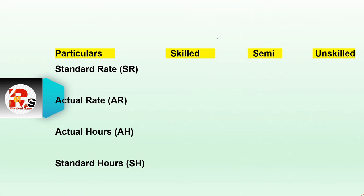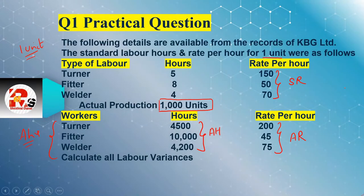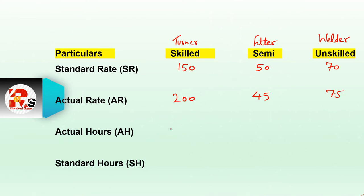The standard rate for Turner (skilled), Fitter (semi-skilled), and Welder (unskilled) will be presented. We will present the actual hours: 4,500 for Turner, 10,000 for Fitter, and 4,200 for Welder.